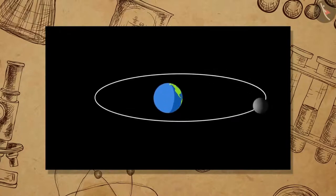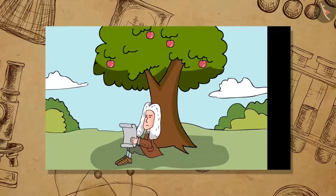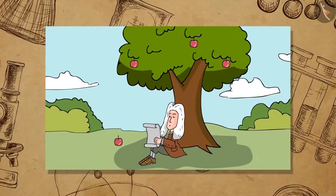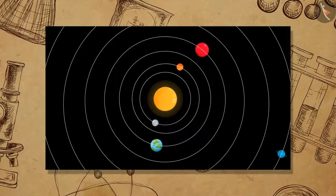Gravitational force is responsible for the motion of the moon around the earth, falling of objects on the surface of the earth, and for motions of the planets around the sun.